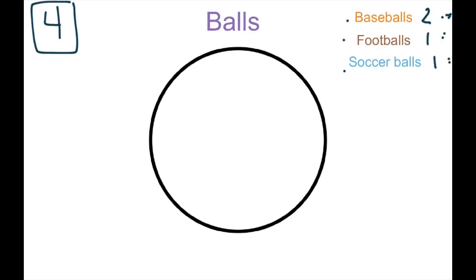This one is bigger, isn't it? This two. So, this piece, the baseballs piece, is going to have to be bigger than the footballs and the soccer balls. So, let's stop and think. I have four balls. What part of four is two? Well, you know that two is half of four, because two plus two equals four.